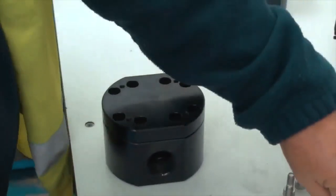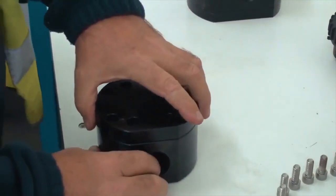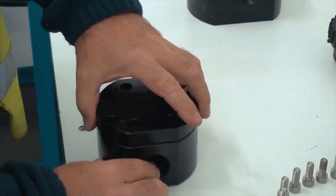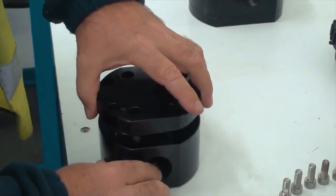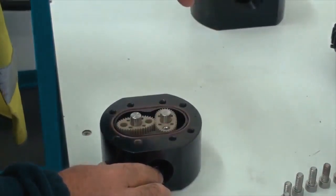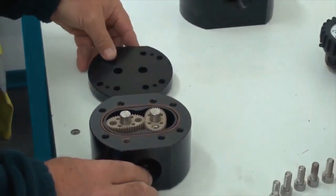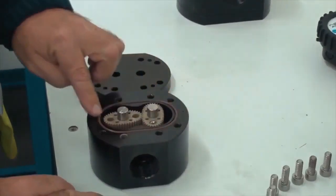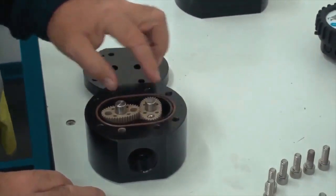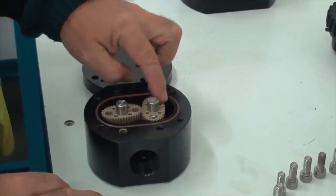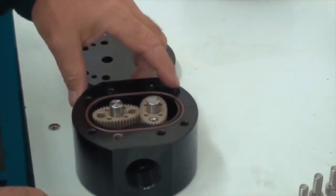Once those bolts are out this will allow us to remove the meter cap. Now this exposes a seal that seals the unit, we have two rotor shafts, two rotors and the actual meter body.